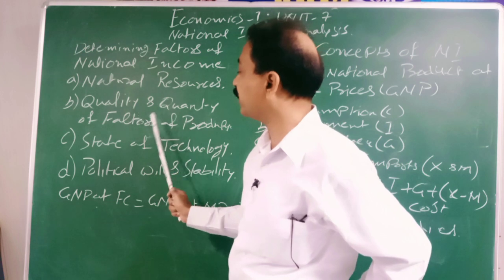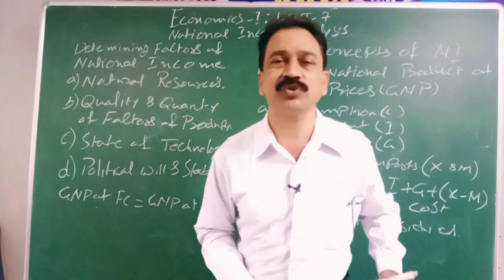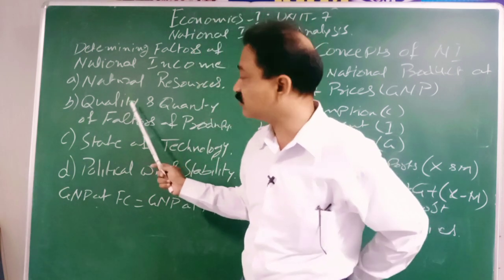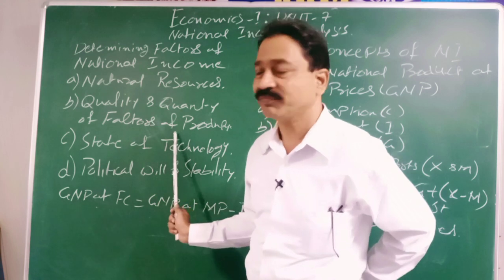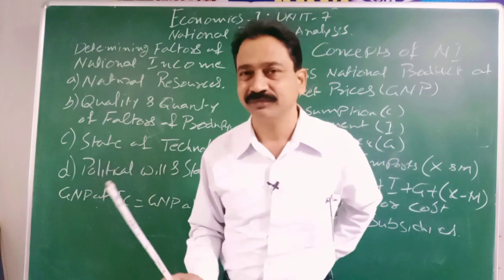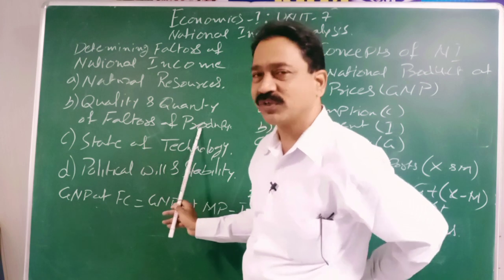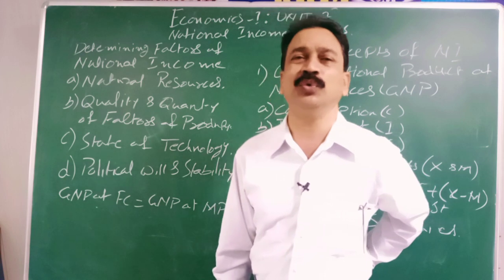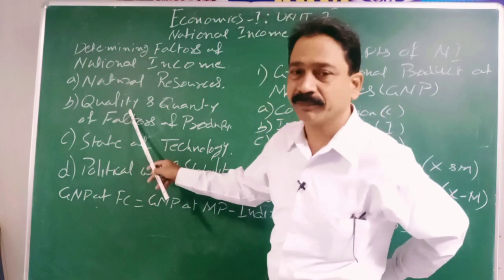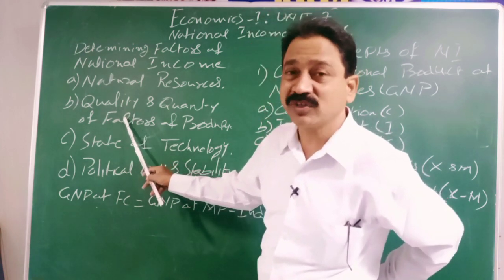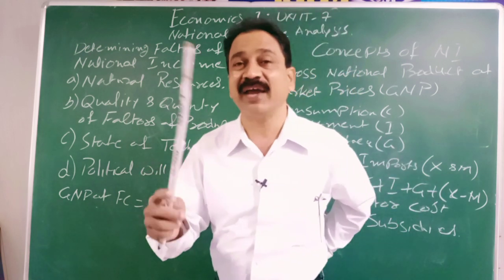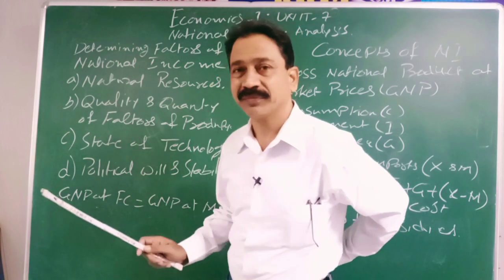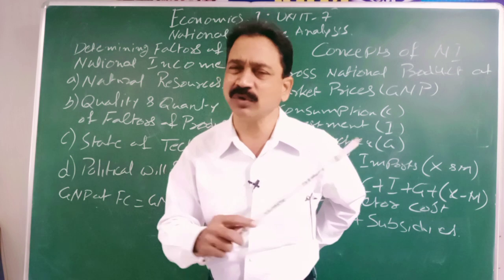The second determining factor is quality and quantity of factors of production. The Japanese have quality as well as quantity of factors of production. Factors of production are not only natural resources — they include human resources too. Quality matters: if you have the best quality iron ore, you get the best iron and can manufacture the best steel. The type and quality of natural resources you have makes a difference.